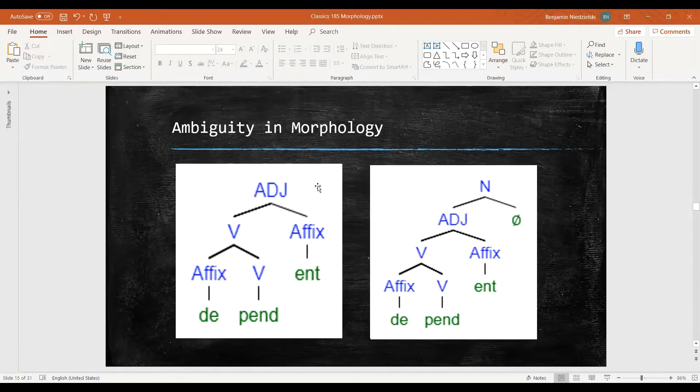Here on the left is a tree for the adjective dependent. We start with our prefix de and our verb root pend to get a verb depend. We then add our suffix ENT to get the adjective dependent. So far so good. This is what we've done so far.